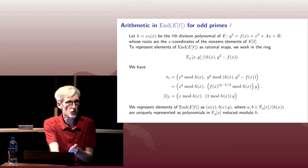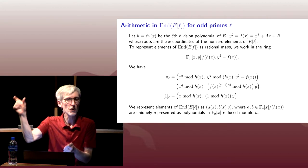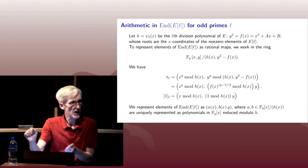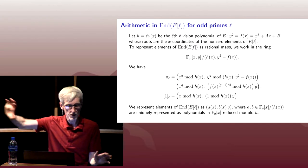What would the Frobenius endomorphism do with an affine point (X, Y)? It would send it to (X^Q, Y^Q), which would also be an affine point. So I don't need to worry about projective points. Right now we're sort of nailing everything down. Our point at infinity is fixed.